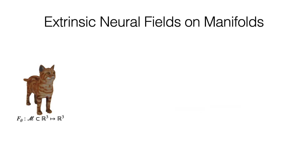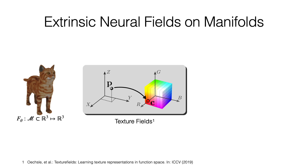In this work we will focus on neural fields on manifolds, specifically shapes in 3D. While the proposed method is more general, we will use texture representation as the running example. For any point on the surface, the neural field should return an RGB value. Current methods, like texture fields, use the following procedure.